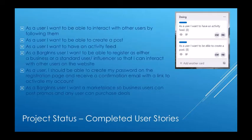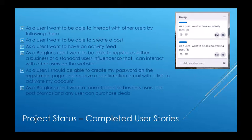We had six major user stories that we completed this semester. We created a follow button where users can follow each other, and you can see a list of your followers and a list of who you follow. We have a button to create a post where you can add a location, text, an image, and tag people. We created an activity feed where you can see your own posts and the posts of people you follow. From here you can also like or dislike posts and comment on them.